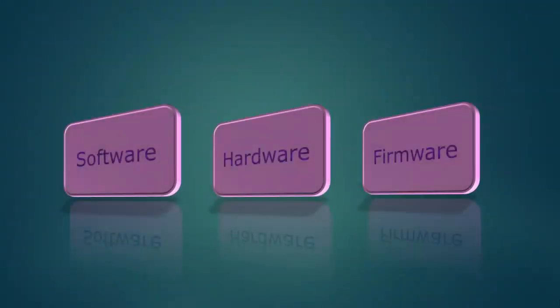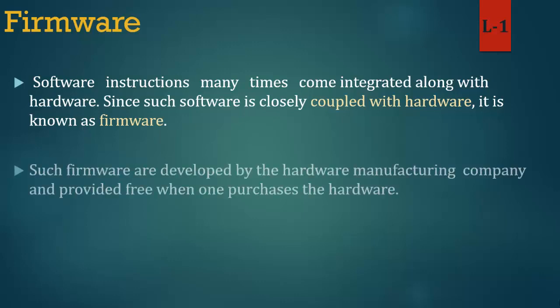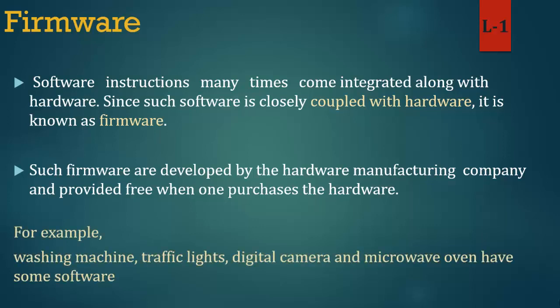Now we learn about firmware in detail. Firmware: software instructions many times come integrated along with hardware. Since such software is closely coupled with hardware, it is known as firmware. Such firmware is developed by the hardware manufacturing company and provided free when one purchases the hardware. For example, washing machines, traffic lights, digital cameras and microwave ovens have some software built in.